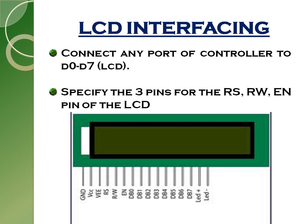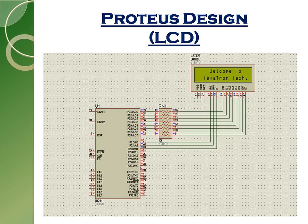Next is LCD interfacing. The LCD has eight data pins from D0 to D7, and three control pins: RS, RW, and EN, as you can see in the figure. You have to send the respective logic on RS, RW, and EN. It also has VCC, ground, LED+ and LED- for the backlight. This is the Proteus design for LCD interfacing with the 8051. I have also connected a pull-up resistor on Port 0.